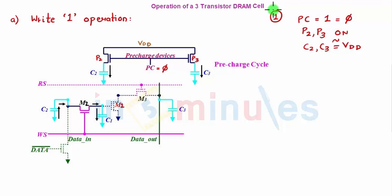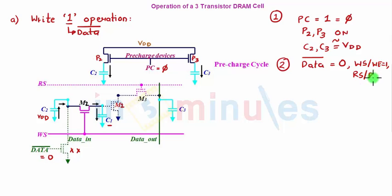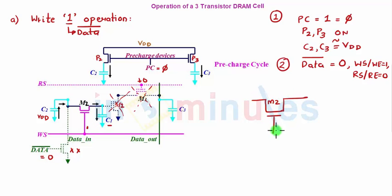For write 1, this pre-charge step is common for all operations. The second step: we want to write a 1 at capacitor node C1. Make data bar equal to 0 — exactly opposite to what you want to write. If data bar is 0, that transistor is off. C2 is already charged to VDD. For a write operation, write select or write enable is high and read select is 0. So M3 is off, M1 has no gate voltage so it is also off, and M2 is on.